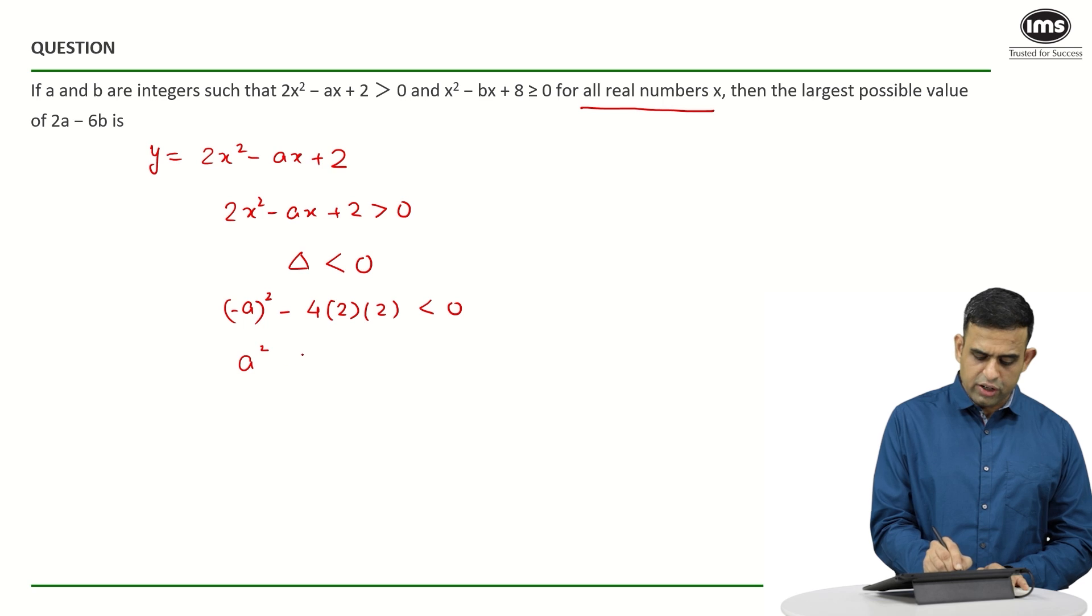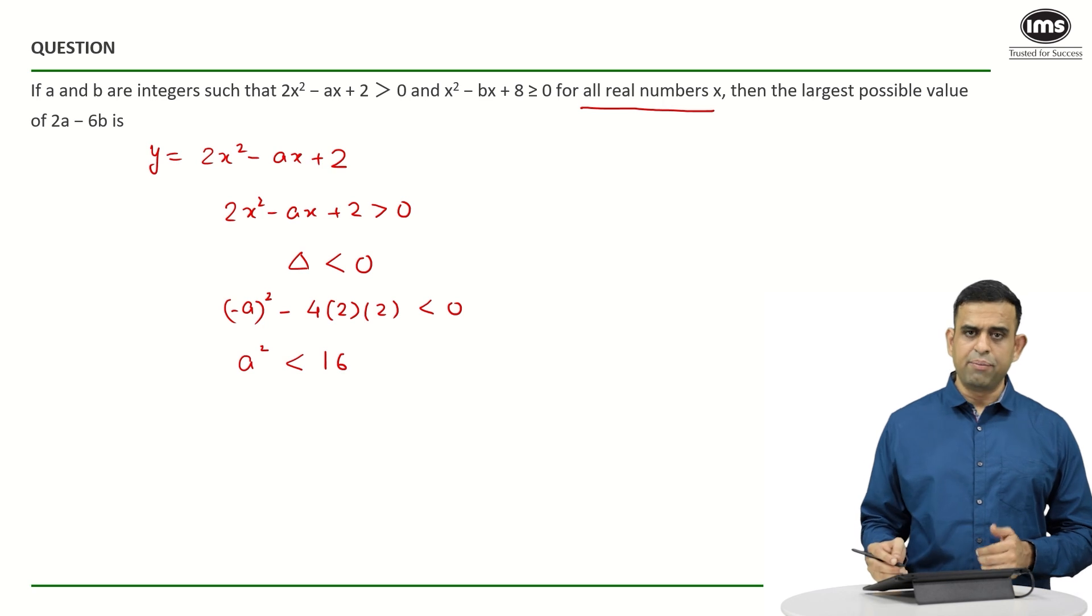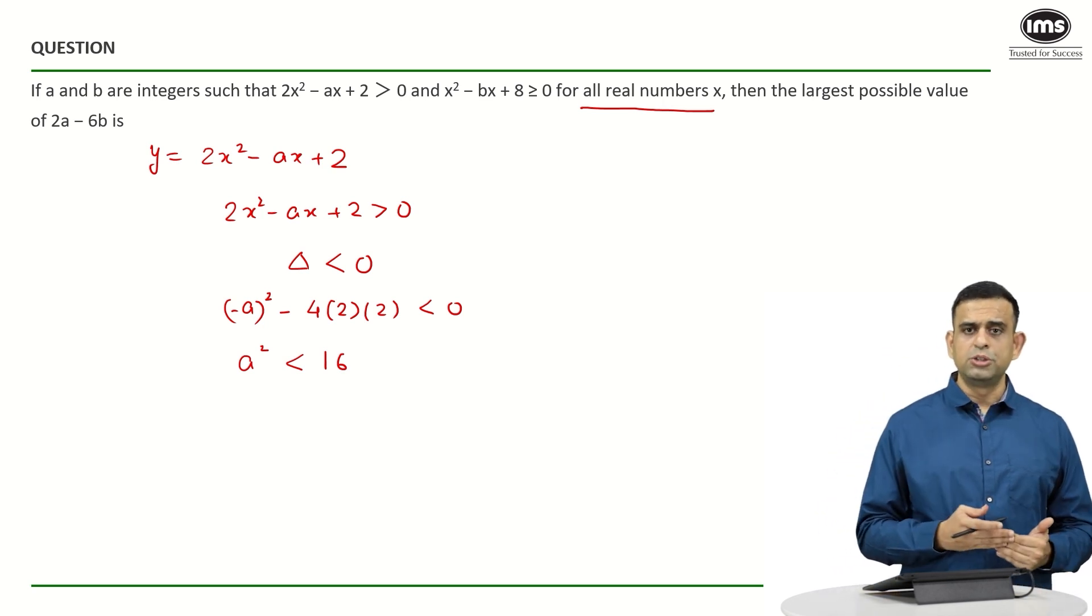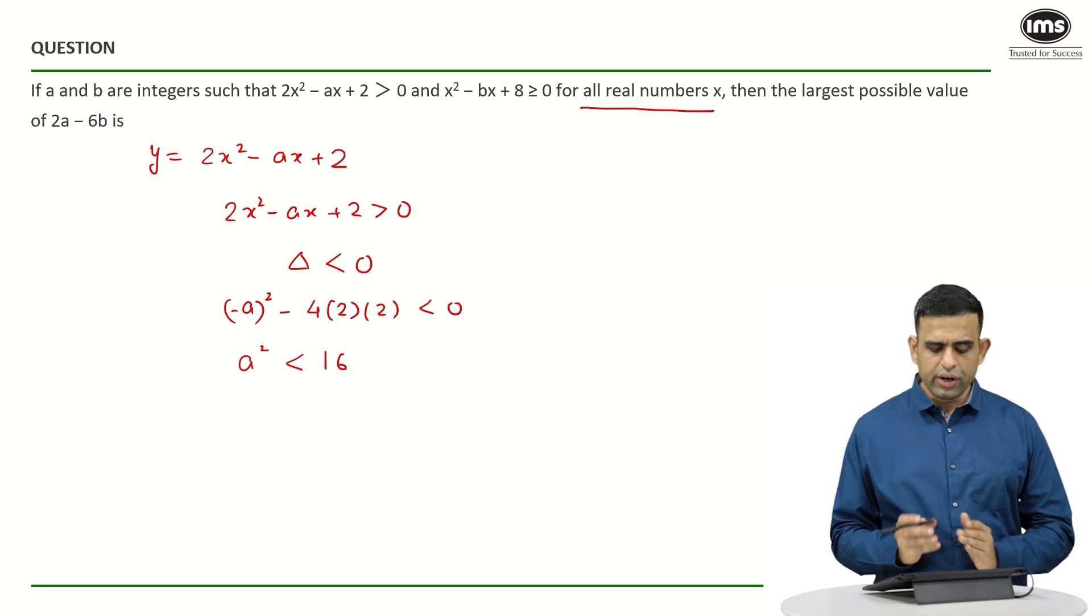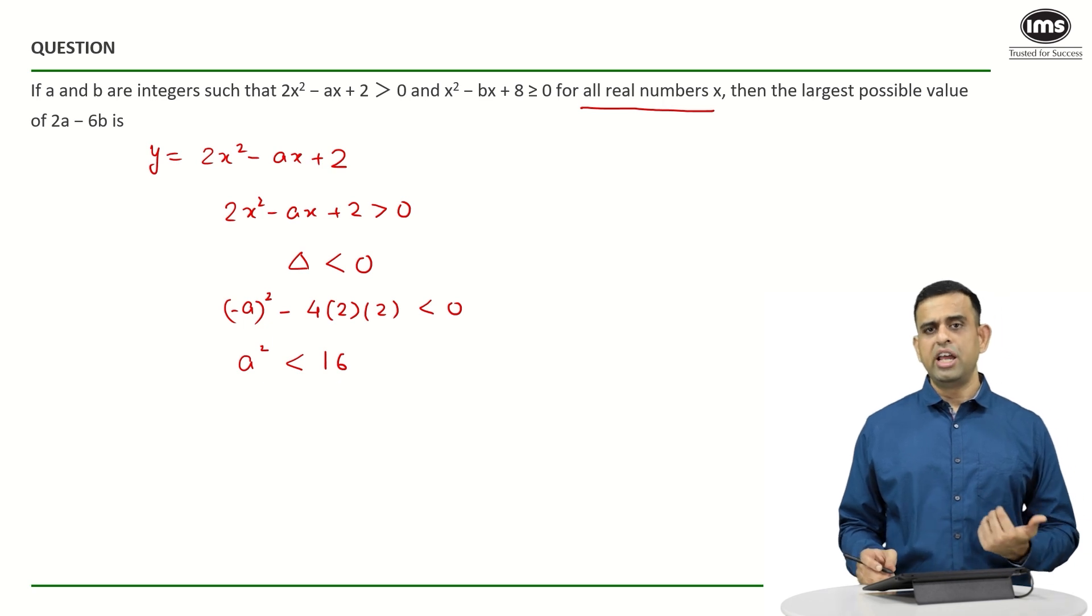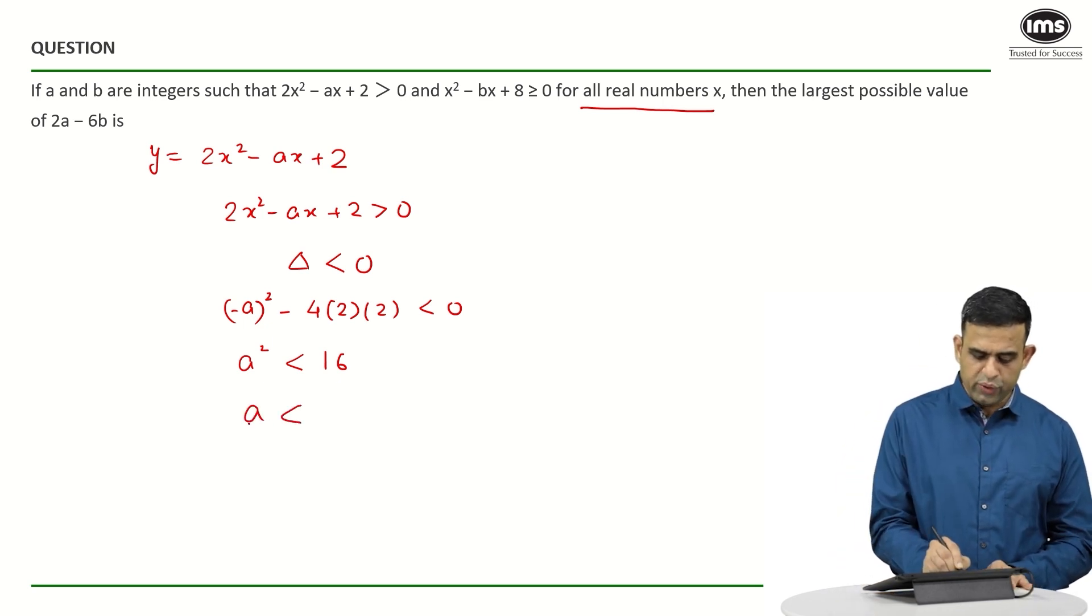So one will get a² to be less than 16. So here if you look at the largest possible value of a can be plus 3 if I look at the integer side or the lowest possible value of a has to be minus 3. If I want an inequality over here, one can say if a² less than 16, a must be less than 4 and a must be more than minus 4, which simply mean that a is between minus 4 to plus 4.